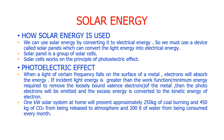When light of a certain frequency falls on the surface of a metal, electrons absorb the energy. If the incident light energy is greater than the work function — the minimum energy required to remove the loosely bound valence electrons — then photo electrons will be emitted and the excess energy is converted into kinetic energy of the electrons. This is the basic principle of the photoelectric effect.